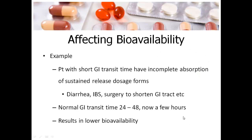A quick example of insufficient time for absorption: patients with short GI transit times are not able to have the complete time needed to absorb the drug. This can happen for various reasons — diarrhea, IBS, or even surgery. There are surgeries where the GI tract is actually shortened, which creates an inability to absorb the complete amount of drug.